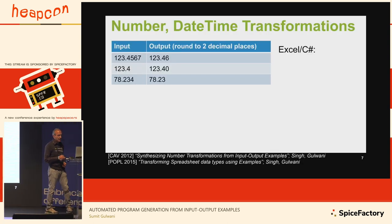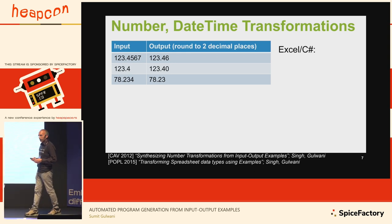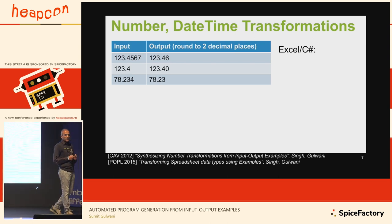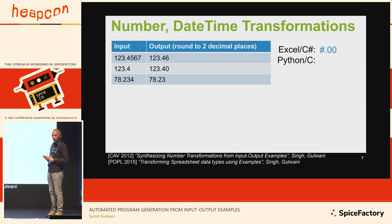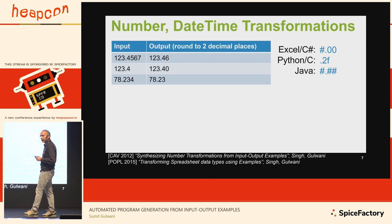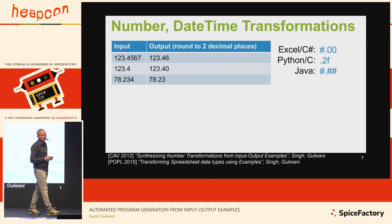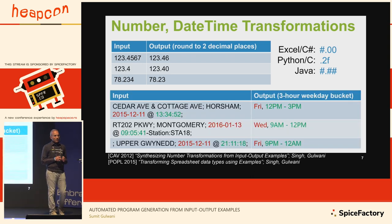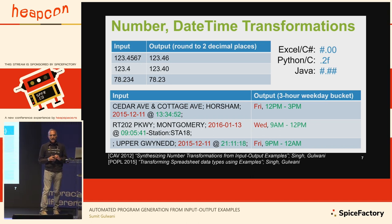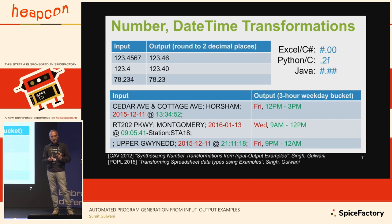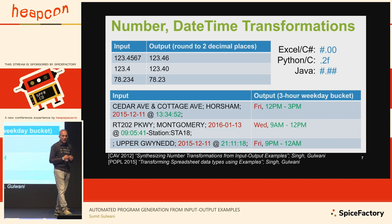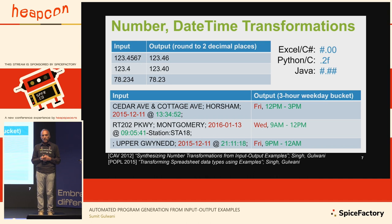This is what we've done in the new Flash Fill++ feature. Now we can automate transformations beyond strings — such as number transformations. Even for something as simple as rounding a number, you need to remember format descriptors in Excel, C#, Python, or Java. But examples are a natural way to specify your intent, and from a couple of examples we can automatically discover those format descriptors and automate the task. Here's another scenario common in data science: given a string input, extract a date and map it to the corresponding weekday, and extract the time and bucketize it into a three-hour bucket. Just imagine how much code that would require — but now these tasks can be enabled with just one example.